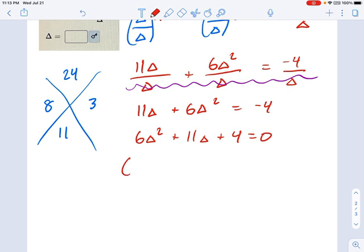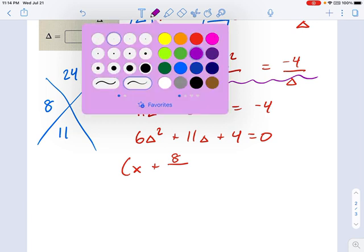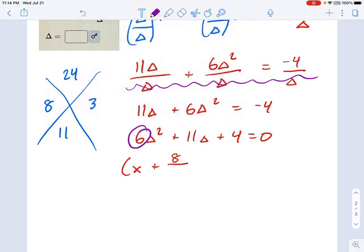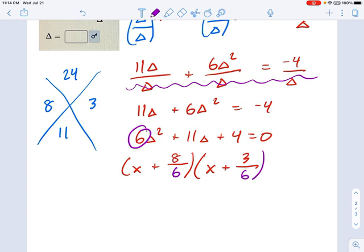We're going to say x plus 8, and it's divided by, I want to be careful here, it is divided by the number that's in front. And it's multiplied by the other term we found, which was 3, also divided by that 6.